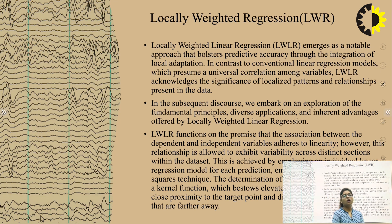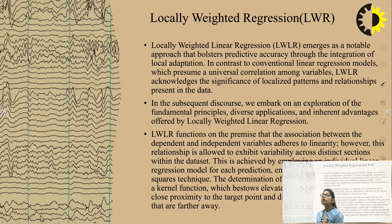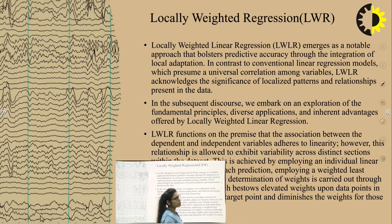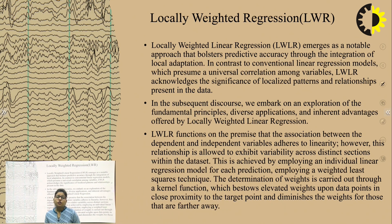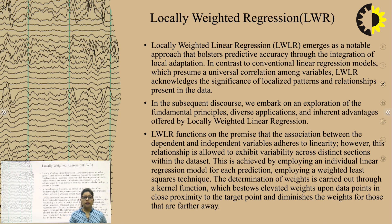The next topic is locally weighted regression, another type of instance-based learning. Locally weighted regression emerges as a notable approach that bolsters predictive accuracy through the integration of local adaptation, in contrast to conventional linear regression models which presume a universal correlation among variables. Locally weighted regression acknowledges the significance of local patterns and relationships present in the data. Linear regression basically calculates the relationship between dependent and independent variables. In this disclosure, we explore the fundamental principles, diverse applications, and advantages offered by locally weighted regression.